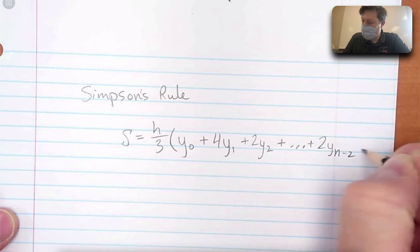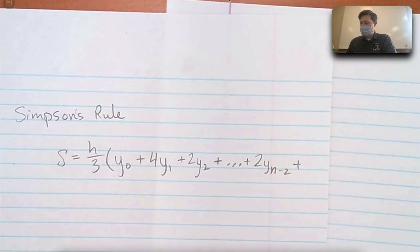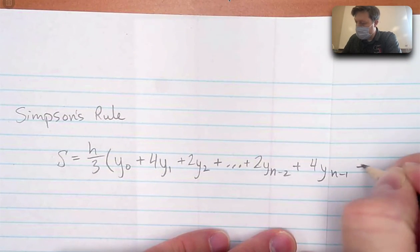n minus 2. Running out of room. Look at this. 4, yn minus 1, plus yn.